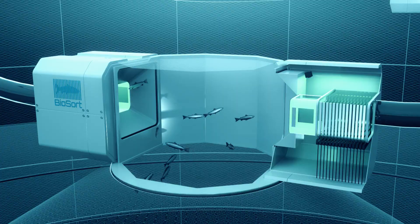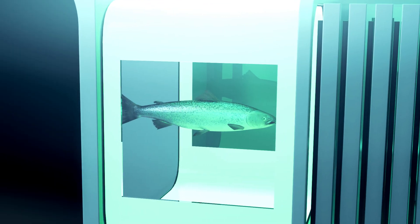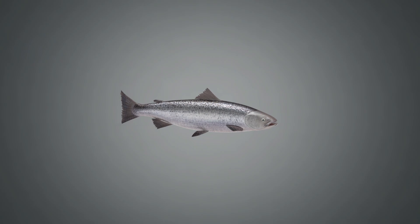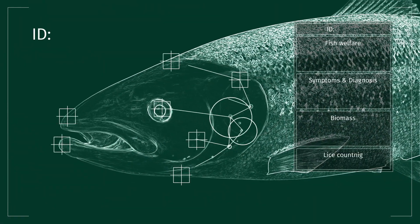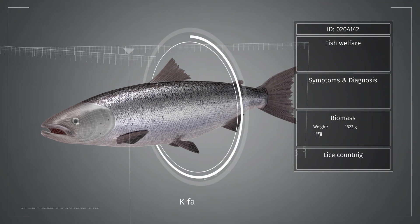The iFarm sensor scans each fish and uses automatic image processing to uniquely identify each individual. Precise weight and growth are measured for each fish.